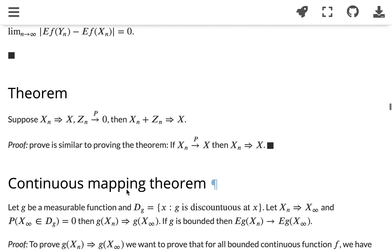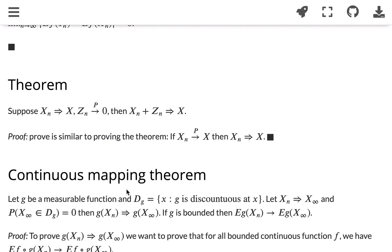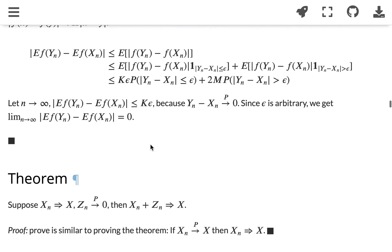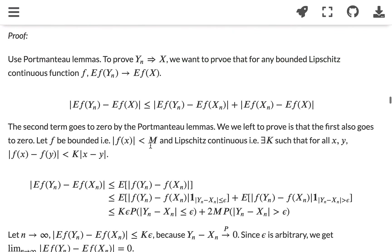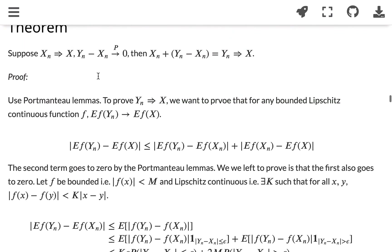The next theorem is: if xn converges to x in distribution and zn converges to zero in probability, then xn plus zn converges to x in distribution. That's very similar — in fact, exactly the same as this one.